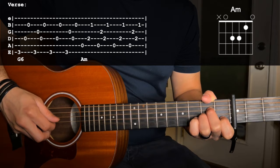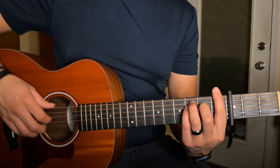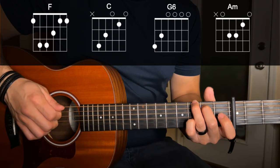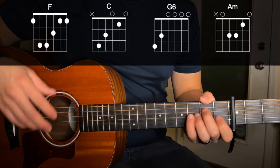Next part up is the chorus. We're going to continue that same picking pattern, but the chords we're going to use now are going to be an F, C, G, A minor. We're going to repeat that chord progression twice, and you're going to do the picking pattern two times for each of these chords.